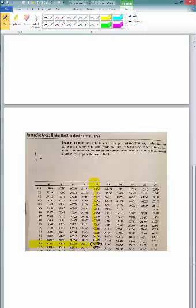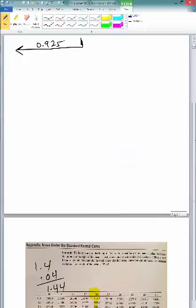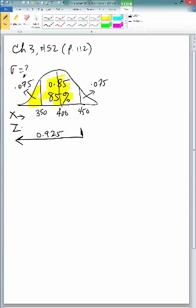You will have 1.4, and then at the top you have 0.04, so we have 1.44 as the Z value.